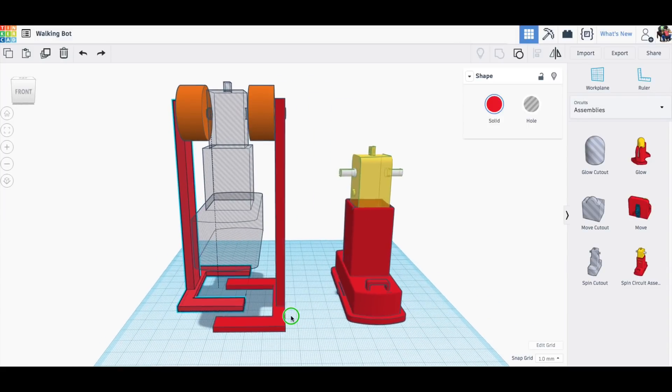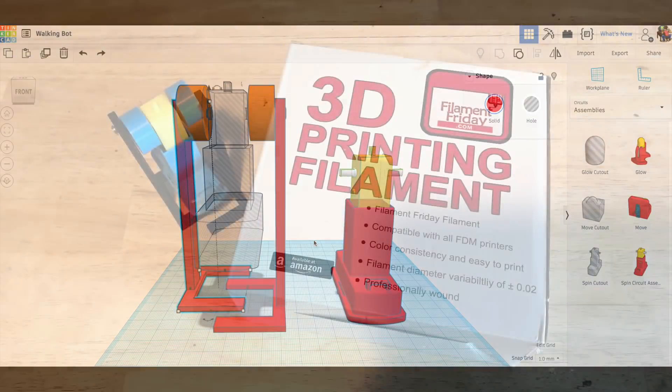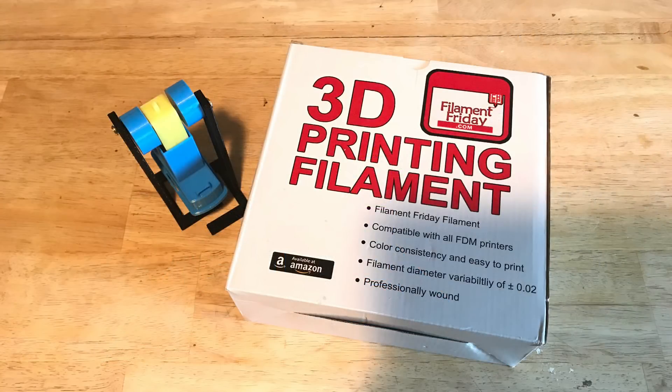There's really three STL files: the cam, the feet, and then the body. And I'm going to use my Filament Friday filament. You can get it now at Amazon.com.